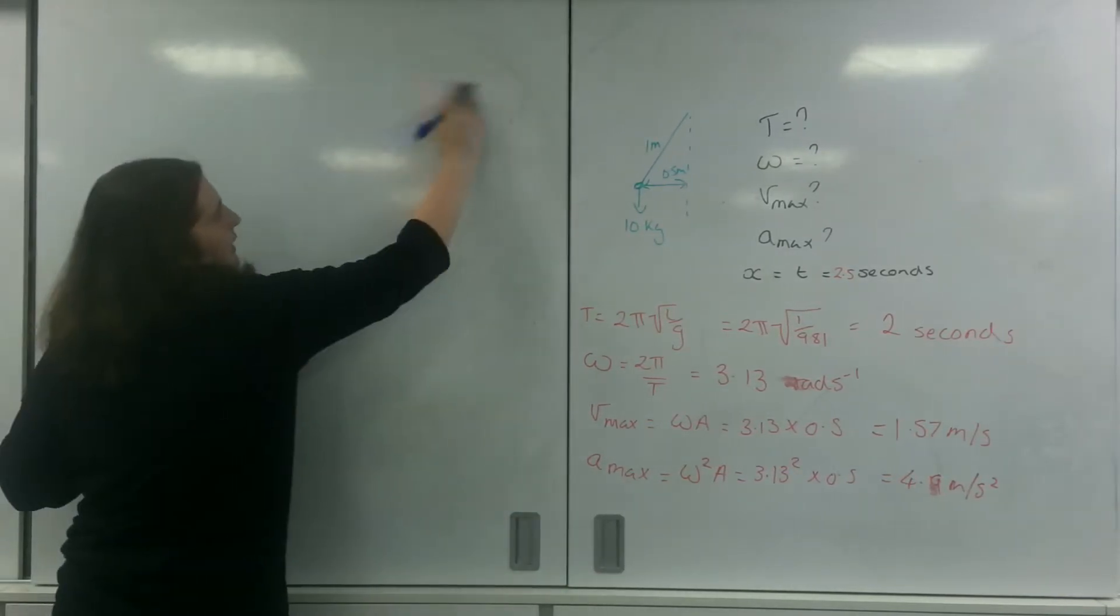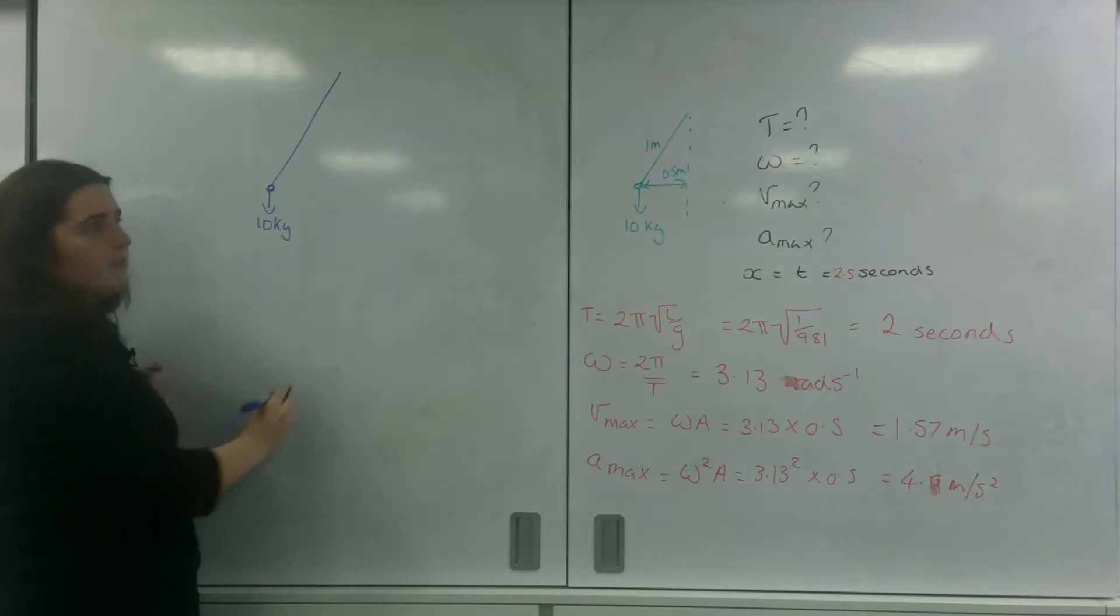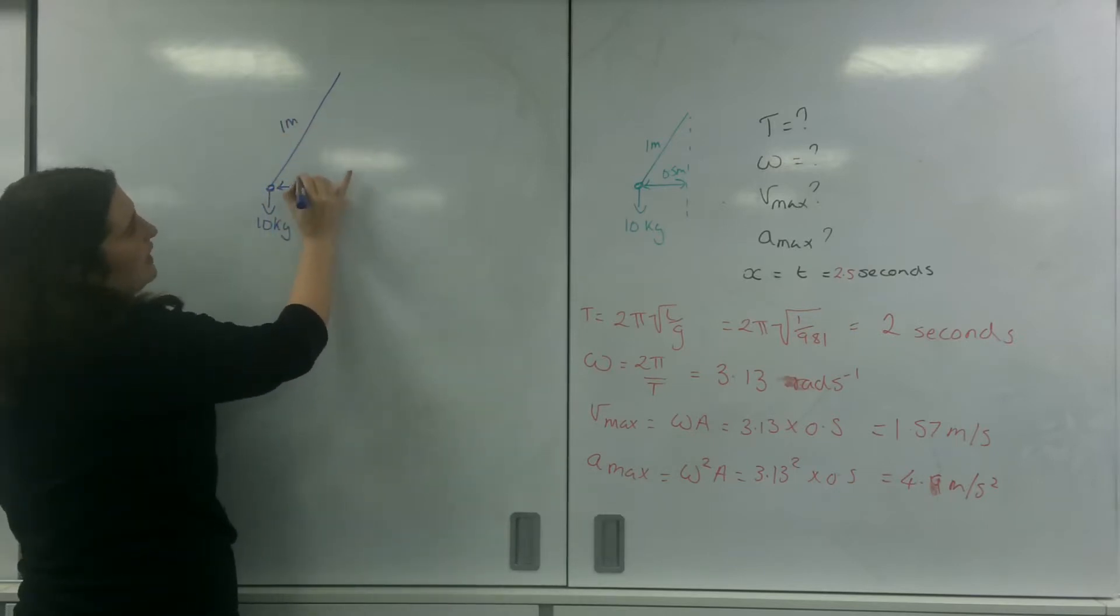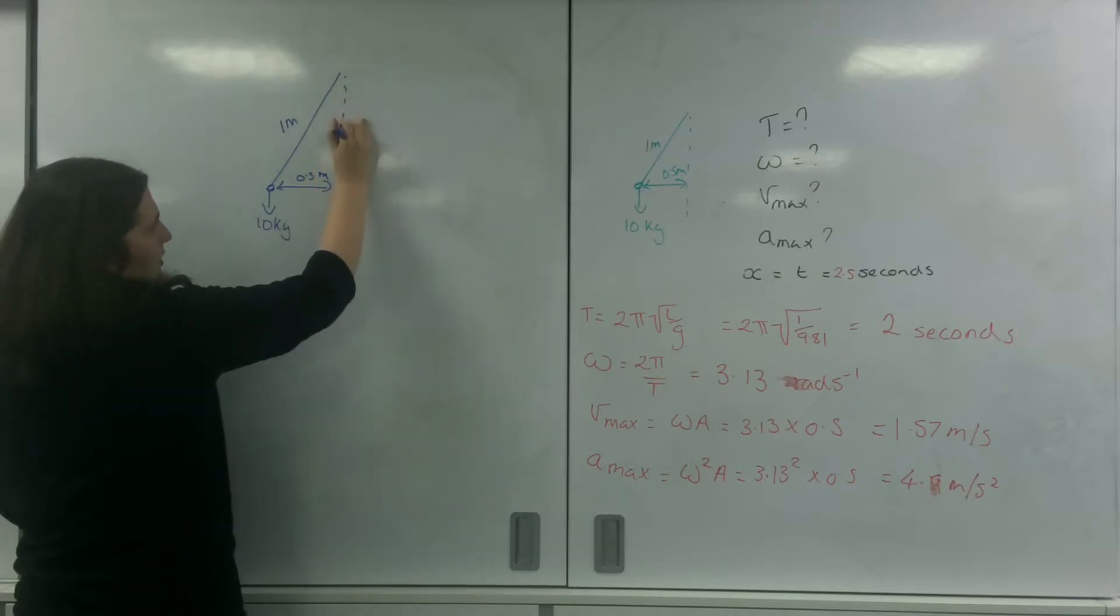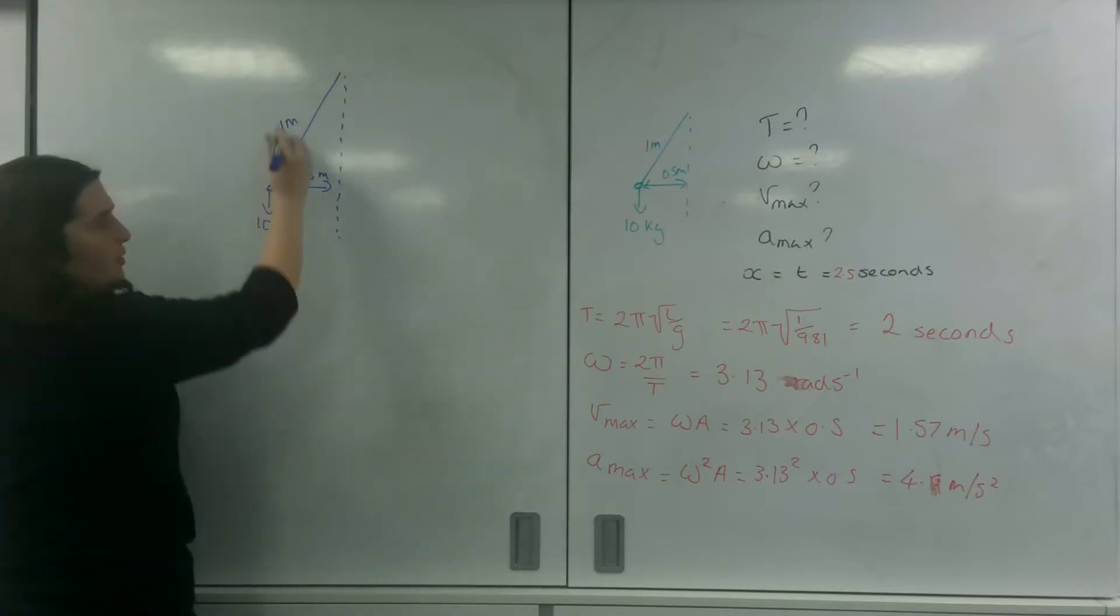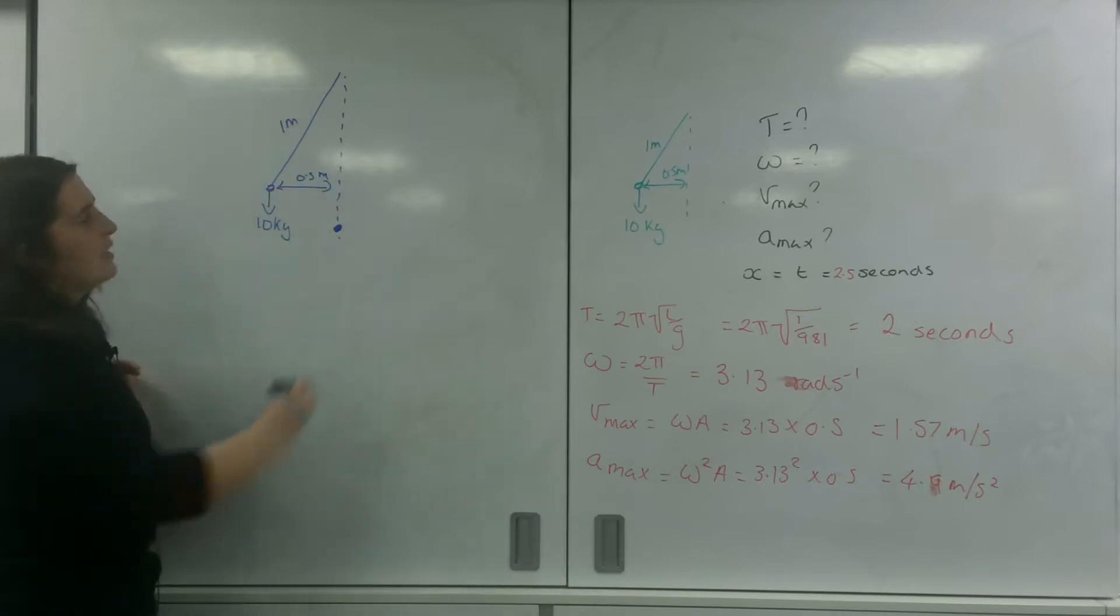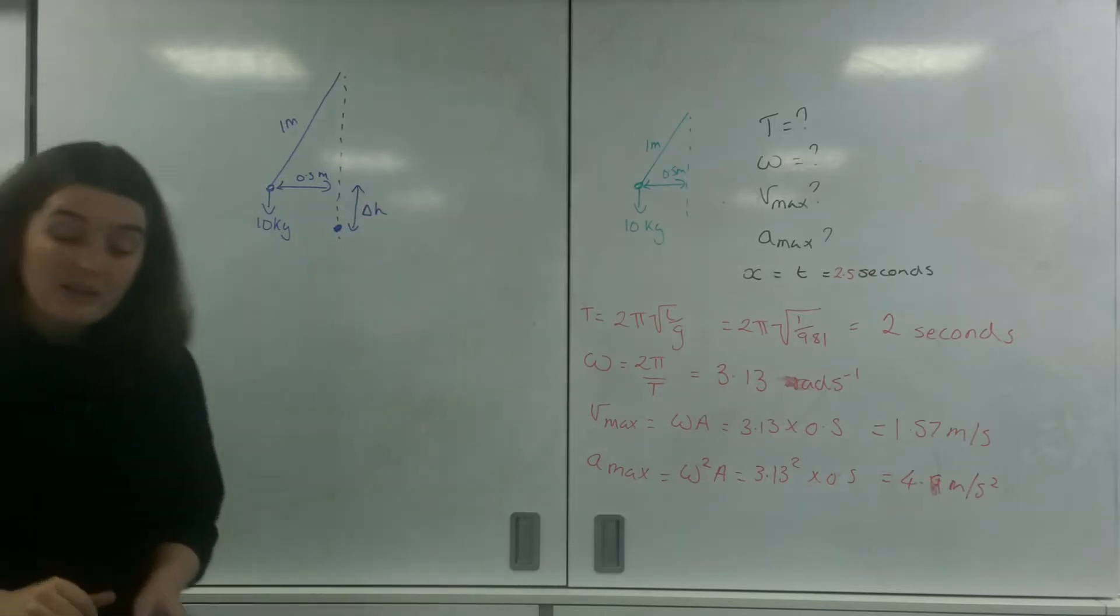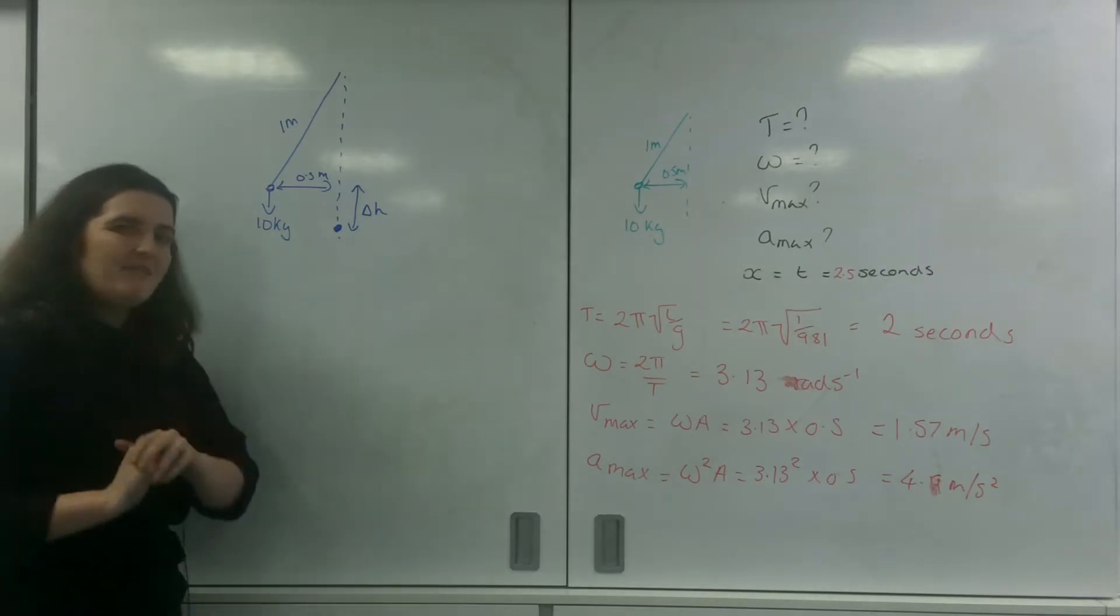So I'm just going to draw this a little bit bigger. So, 10 kilograms, and the length of this object is 1 meter, and the amplitude here is 0.5 meters. So what I'm going to swing, and it's going to come down to this point here. So this here is my change in my height. I'm going to need to calculate it.